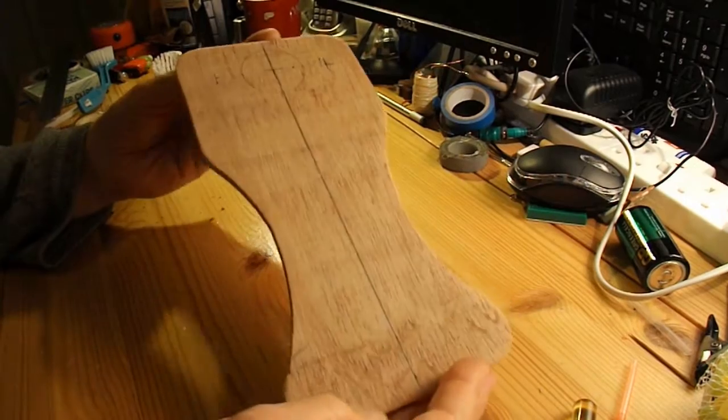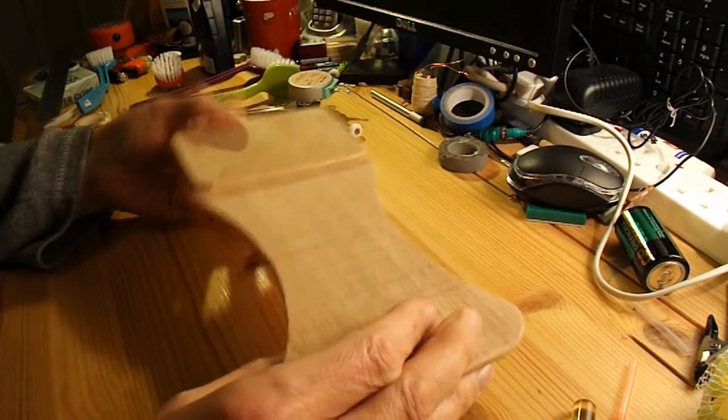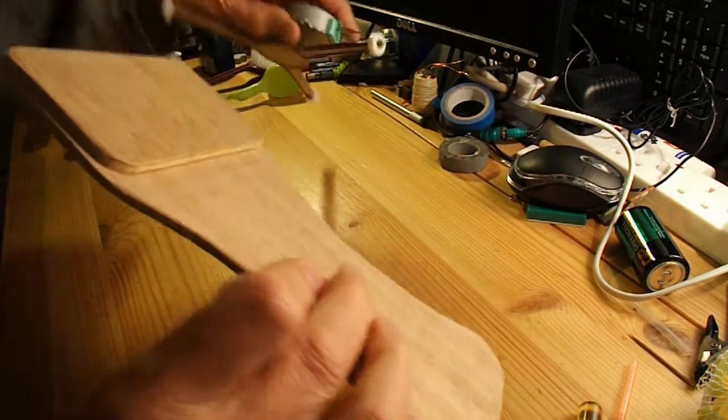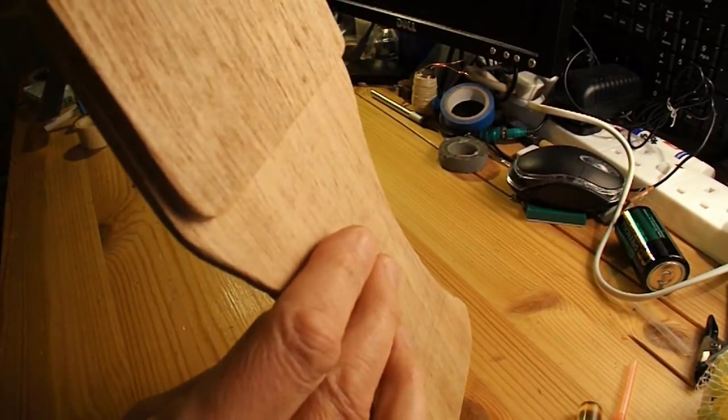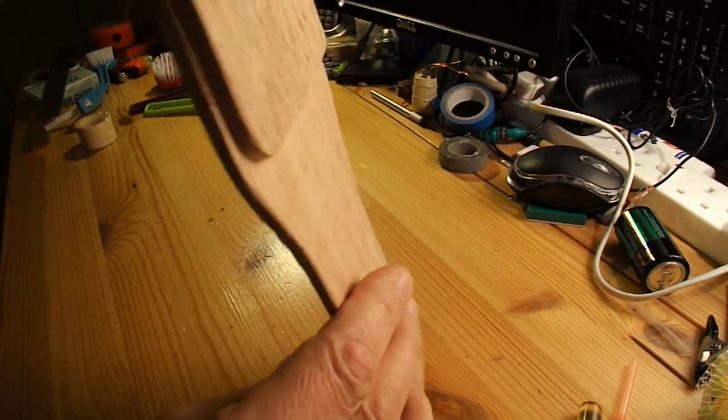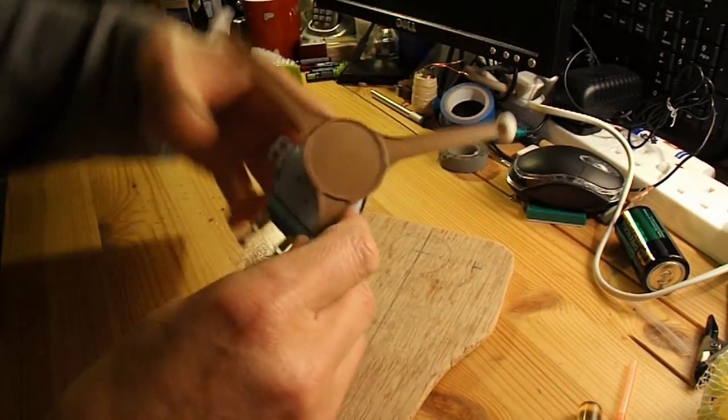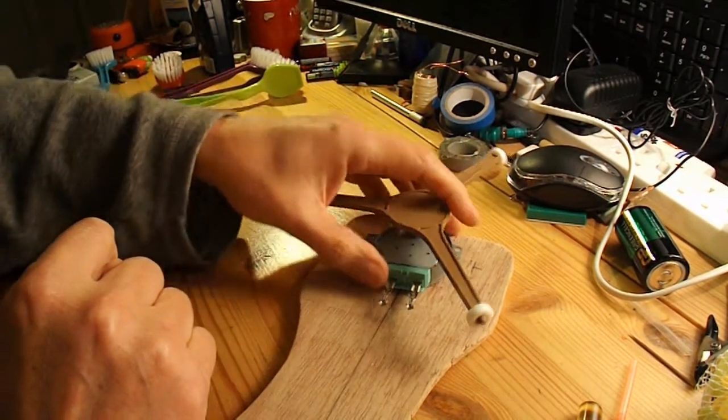OK, been down in the garage, cut out my chassis. I've made it double thickness on the front there just to give me the right thickness. I'm going to mount the motor on top and the legs will be underneath with this spinning around. So I've got a few holes to drill now.